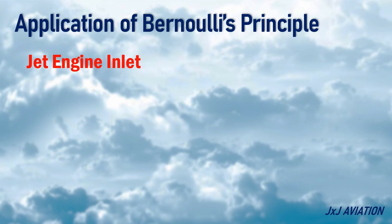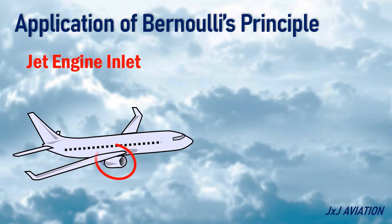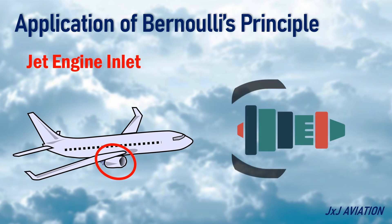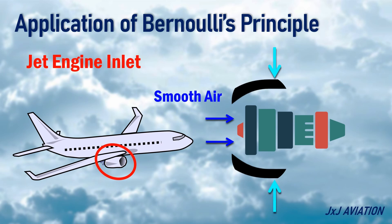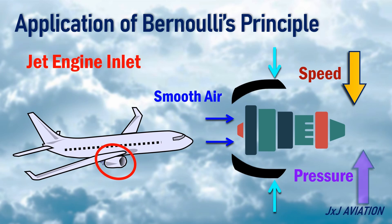Jet Engine Inlets: the inlet section of an aircraft jet engine provides a smooth flow of air to the compressor section. The inlet is designed to expand or become wider. So, as the air flows into the engine, the speed will decrease and the pressure will increase before entering the compressor.